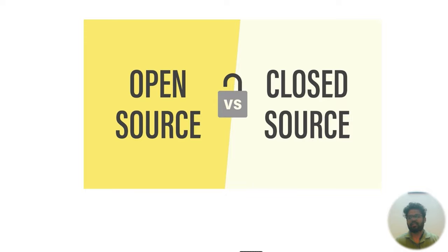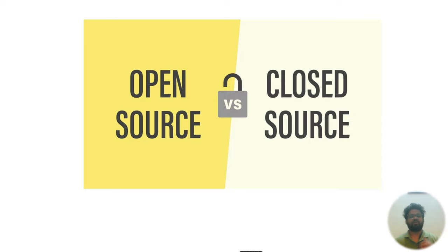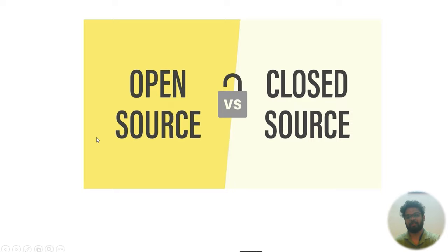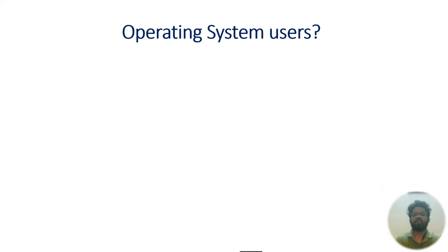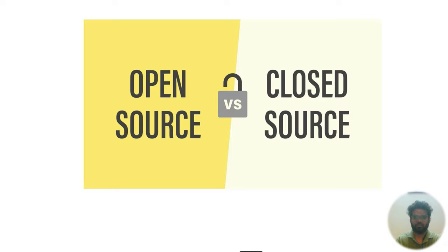Operating systems are either open source or closed source. Open source — like Linux — is free to use; you can access the code and even build your own Linux-based OS, just like Kali. Closed source — like Microsoft Windows — is developed by a company, requires payment, and has a dedicated support team. Open source is community-supported; closed source is company-supported.